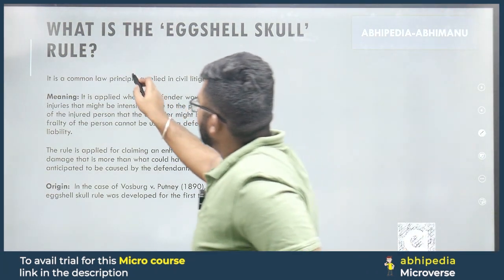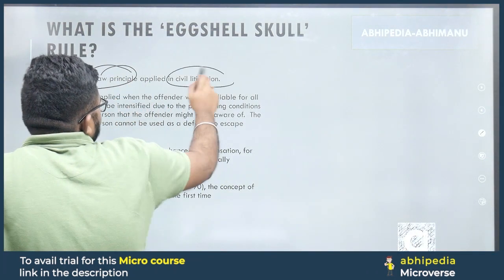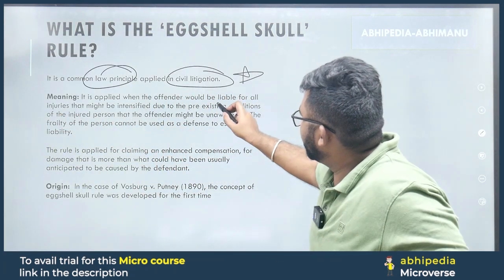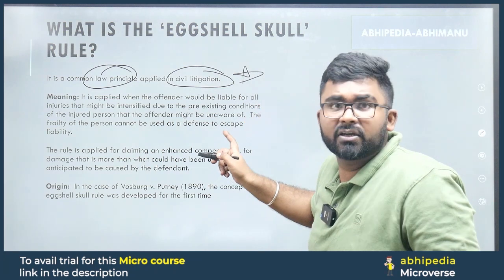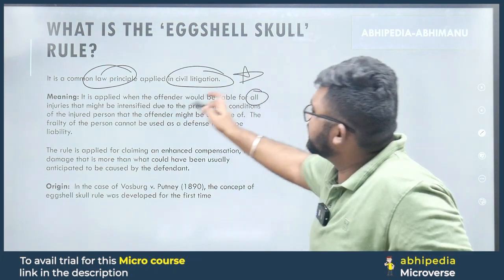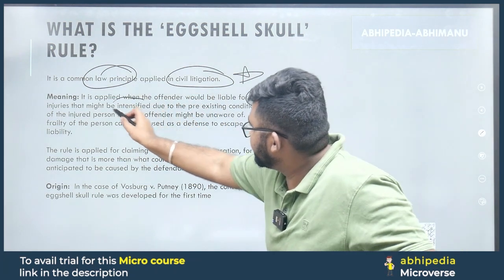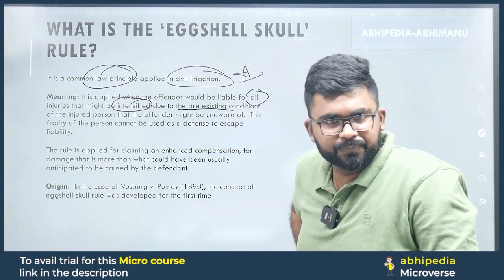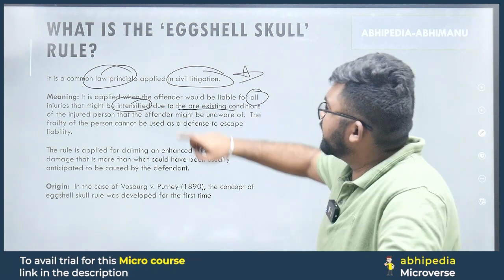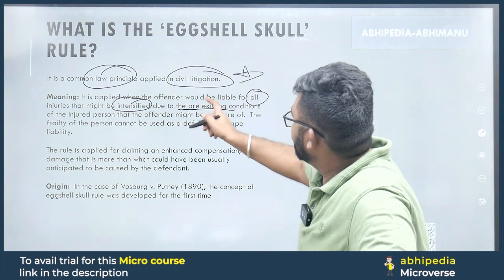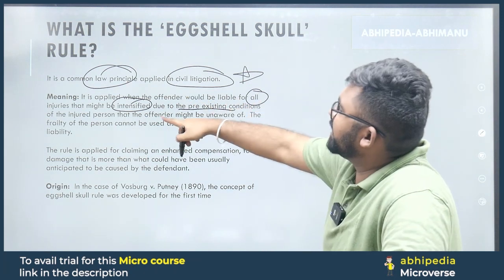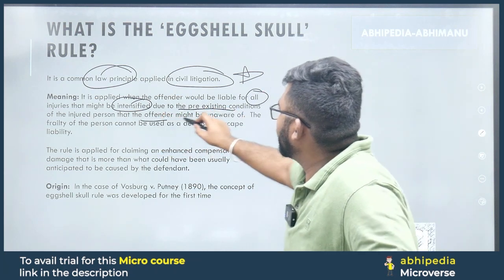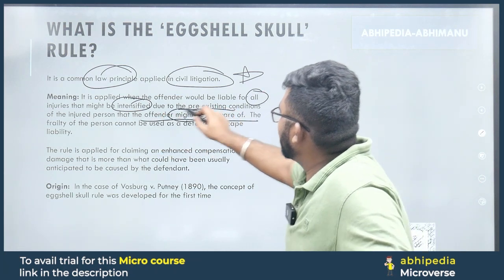Let's understand what this rule is. First of all, it is a common law principle which is applied in civil litigation. It is applied when the offender would be liable for all injuries that might be intensified due to a pre-existing condition of the injured person that the offender might be unaware of.